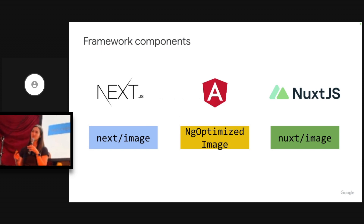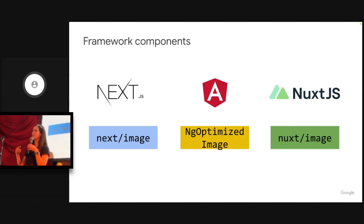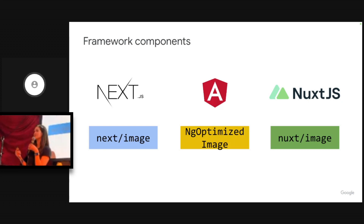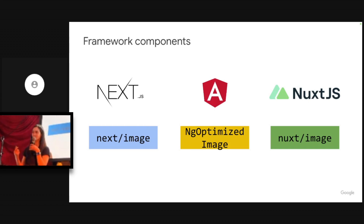If you have built-in components, they can integrate deeply with the frameworks they belong to. You have so much more information about how the page is structured and when it hydrates. You have the whole file system to do static analysis, so you have all this information you can use to improve the developer experience and build things in. There's also a maintenance benefit — companies that have built their own image components don't have time to maintain them as new web features come out.